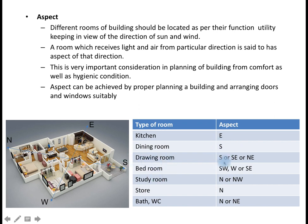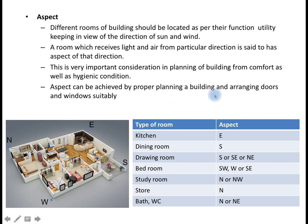Drawing rooms are better placed in south, southeast, or northeast positions depending on availability. Bedrooms are usually at southwest, west, or southeast directions. Study rooms are in the north or northwest direction. Store rooms can be built in the northern direction because they don't need any light and the cool conditions are good for storage. Bath and water closets can be created in the north or northeast portion of the building.